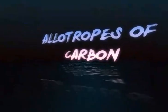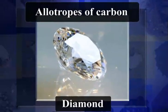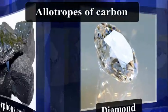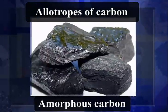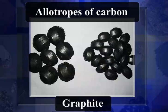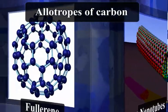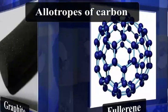Allotropes of Carbon. The element carbon occurs in different forms in nature, with widely varying physical properties. These forms of carbon are called allotropes of carbon.